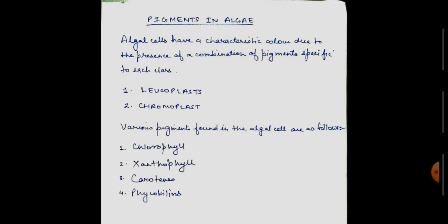Pigments in algae. Algal cells have a characteristic color due to the presence of a combination of pigments. And these combinations of pigments are specific to each class.